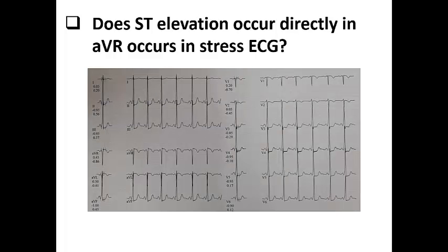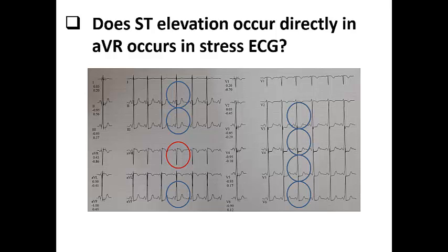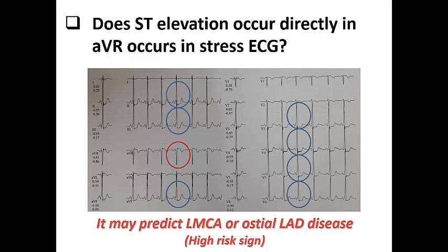Can ST elevation occur directly in AVR during a stress ECG? For example, during a treadmill test with acceleration of heart rate — can ST elevation develop in AVR like other ST changes? Looking at this ECG example, we see ST depression in inferolateral leads and ST elevation in AVR. This patient developed ST elevation in AVR during exercise, predicting left main coronary artery or osteal LAD disease. This should be regarded as a high-risk sign on a treadmill test, and the patient should be scheduled for invasive coronary angiography rather than medical treatment.